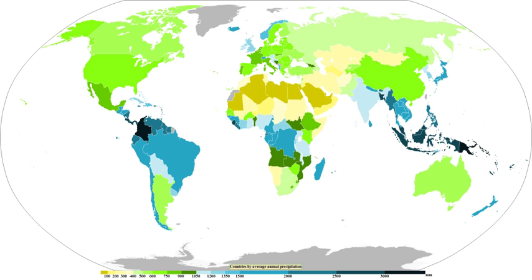Convective rain, or showery precipitation, occurs from convective clouds such as cumulonimbus or cumulus congestus. It falls as showers with rapidly changing intensity. Convective precipitation falls over a certain area for a relatively short time, as convective clouds have limited horizontal extent. Most precipitation in the tropics appears to be convective, though stratiform precipitation also occurs. Graupel and hail indicate convection. In mid-latitudes, convective precipitation is intermittent and often associated with baroclinic boundaries such as cold fronts, squall lines, and warm fronts.